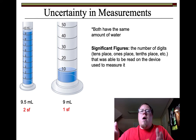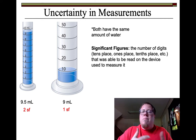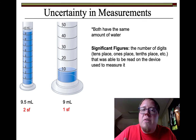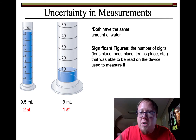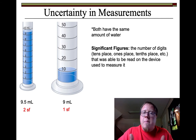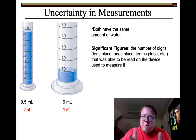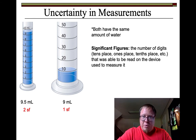Significant figures — how many decimal places, ones and tens and hundreds, am I actually able to read? The digits I'm able to read. So 'figures' means actual numbers — how many of them are significant, meaning I was able to read them.